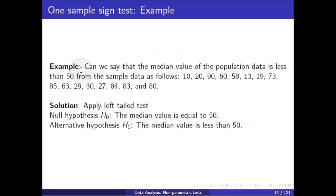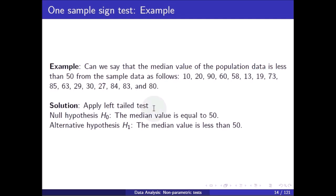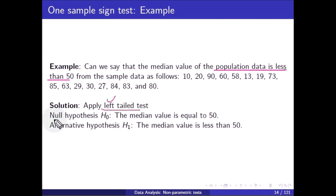Example 1: Can we say that the median value of the population data is less than 50? Here the hypothesized median value is 50, that is median A = 50, from the sample data — single dimension data: 10, 20, 90, and so on. We apply the left-tail test because the question is whether the population data is less than 50 or not. If the question were whether the population data is more than 50, we would apply the right-tail test. If the question were whether the population data equals 50, we would use the two-tail test. The null hypothesis is that the median equals 50, and the alternative hypothesis is that the median is less than 50.